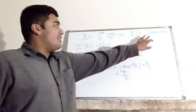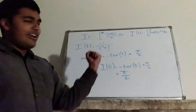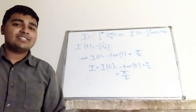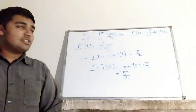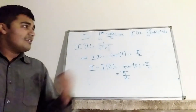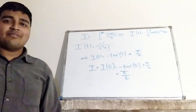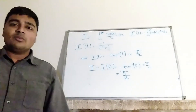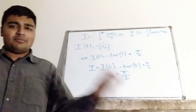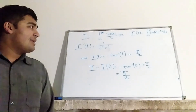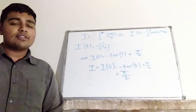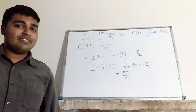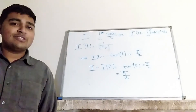The trick was starting with I(t), differentiating it to get a nicer integral, obtaining the differential equation I'(t) equals minus 1 over (1 plus t squared), integrating to find I(t) up to a constant, plugging in t equals infinity to conclude the constant must be π/2, and then plugging in t equals 0 to give us the integral equals π/2.